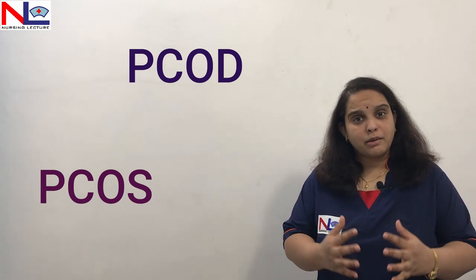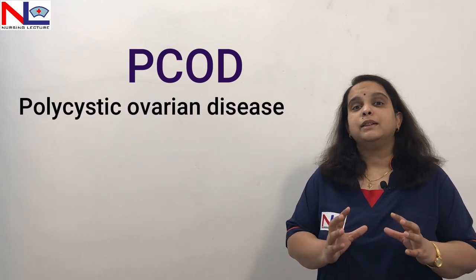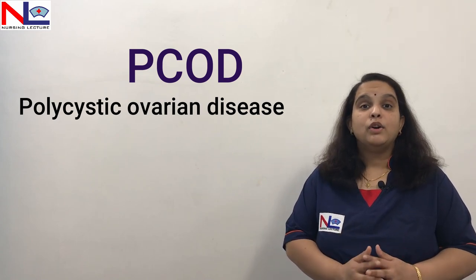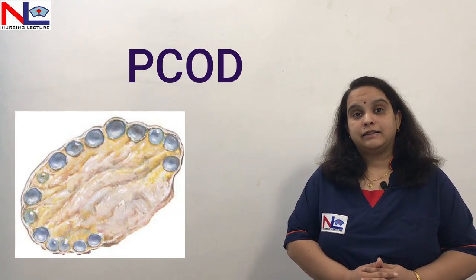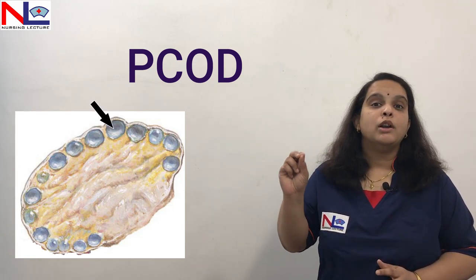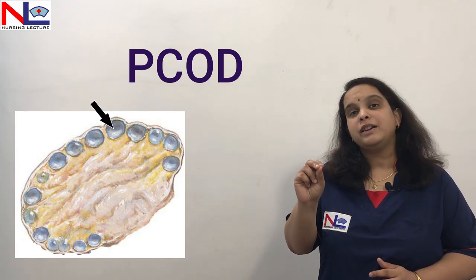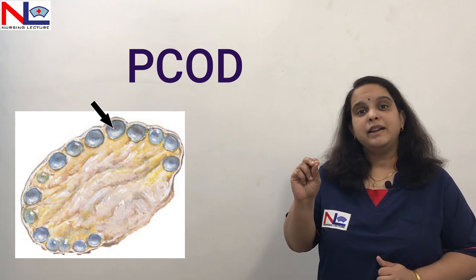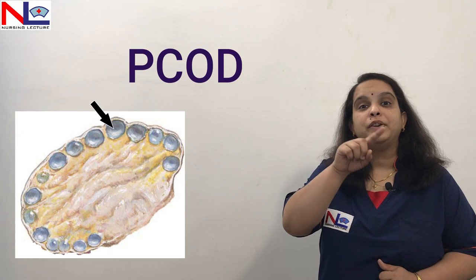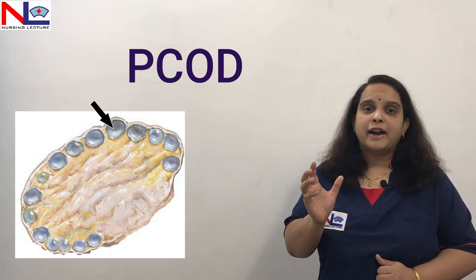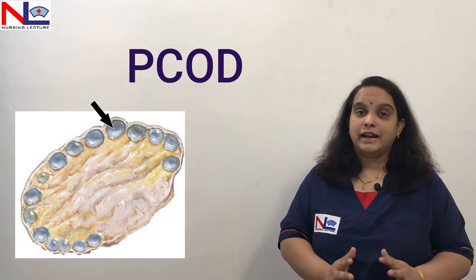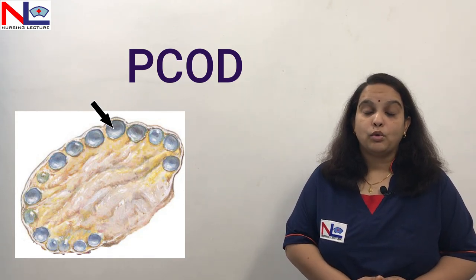If we are talking about PCOD, then the problem is only confined to the ovaries. If we do an ultrasound scan, we can find that there are many small follicles which are immature and degenerated, looking like cysts arranged in the periphery of the ovary. If we find this in the ultrasound scan, then we can confirm it as a case of PCOD.